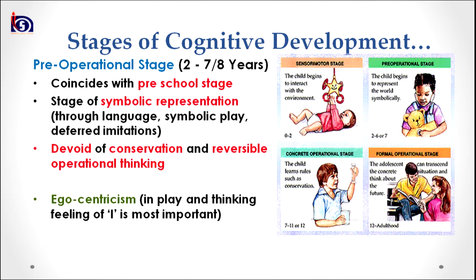The second stage is the pre-operational stage, spanning 2 years to 7 to 8 years of life. This stage is very important as it coincides with the pre-school stage — early childhood care and education. This stage symbolizes the growth of symbolic representation through language, symbolic play, and deferred imitations. Symbolic representation and the presence of language start here, and the child is able to use language and linguistic symbols meaningfully.